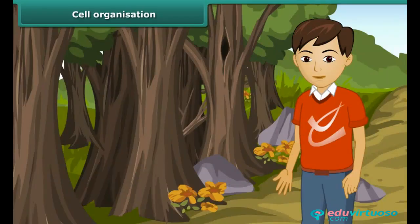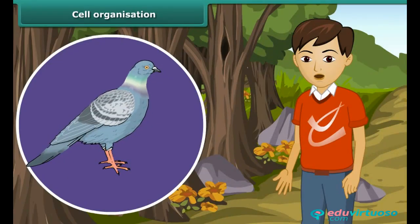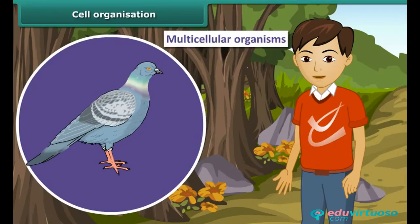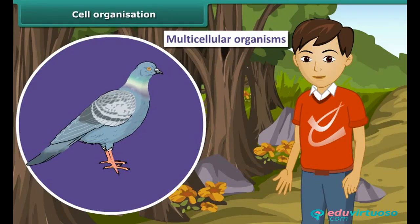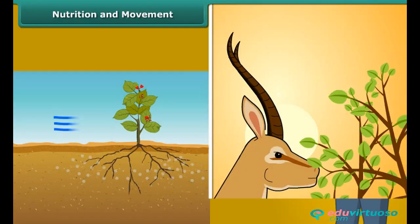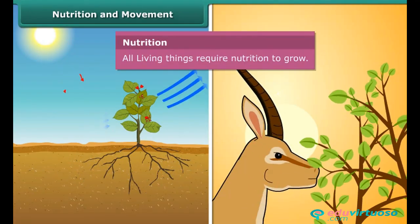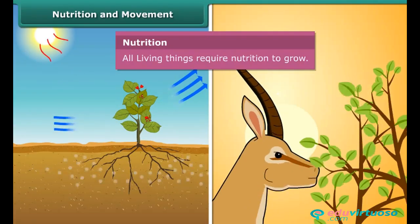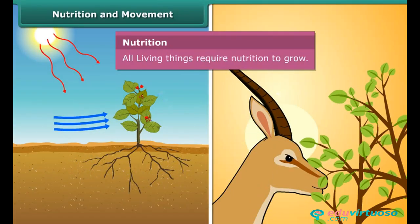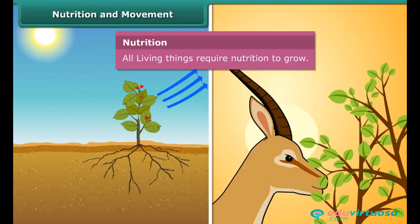Human beings, pigeons, and the mango tree are made up of many cells, so they are called multicellular organisms. Another important characteristic of living things is nutrition. All plants and animals require food to grow and survive. Plants prepare their own food by the process of photosynthesis in the presence of sunlight, whereas animals depend on plants for their food.